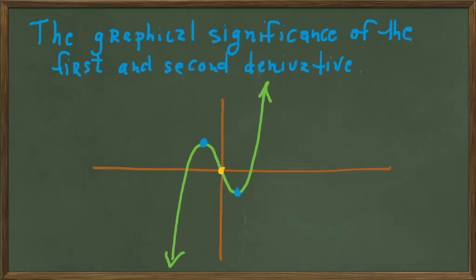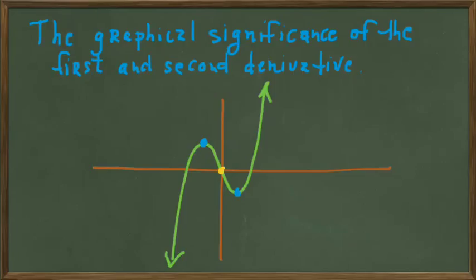In this video, we're going to thoroughly investigate something we've only touched on lightly so far: how first derivative information is related to the shape of graphs of functions. We're also going to look at how second derivative information helps us determine the shape of graphs and use both first and second derivative information together to generate extremely accurate graphs, much more accurate than we could do just by plotting points.